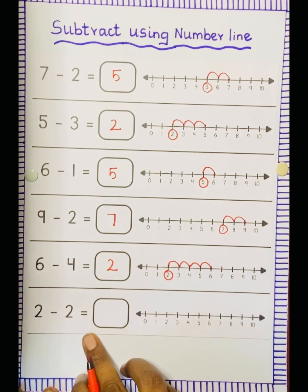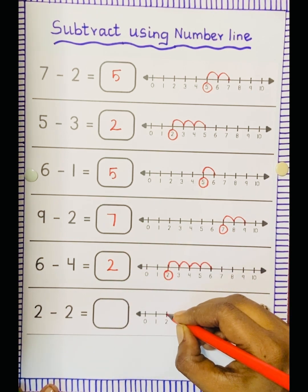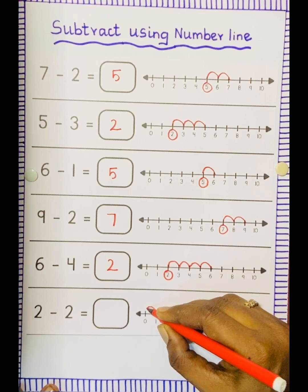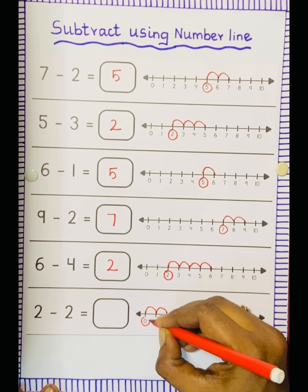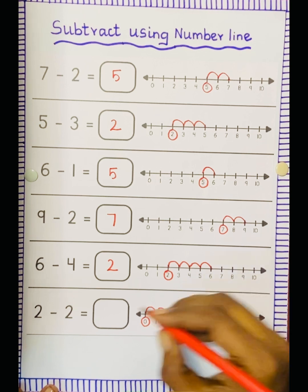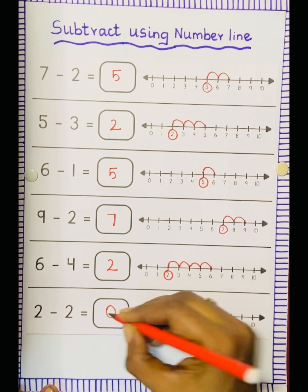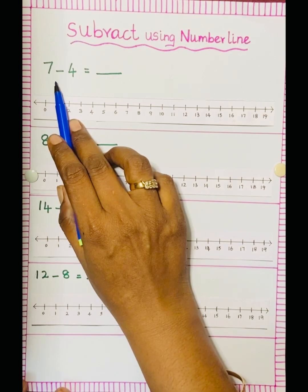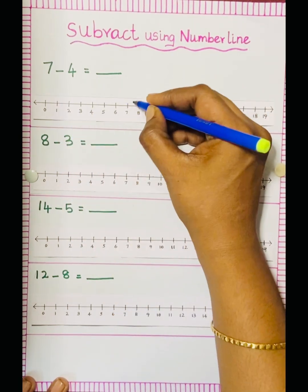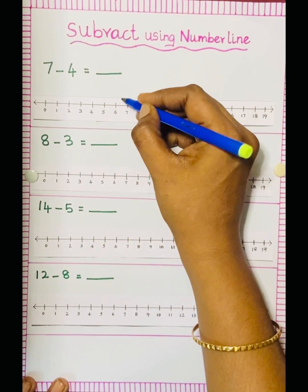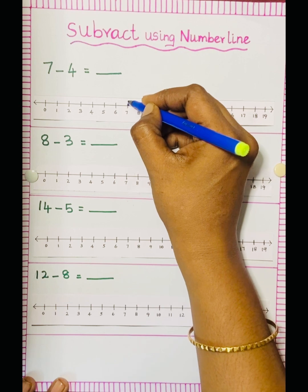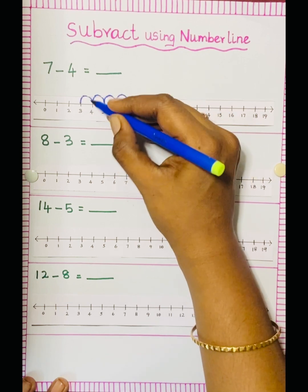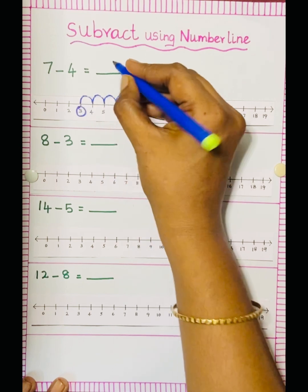2 minus 2. So keep the dot at 2, minus 2 means 2 jumps: 1, 2. So the answer is 0. Next one: 7 minus 4. So we have to keep the dot at 7, then 4 jumps: 1, 2, 3, 4. So the answer is 3.